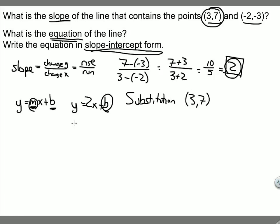So looking at this equation, 7, there's my y value, equals 2 times x value, which is 3, plus b. 7 equals 6 plus b. Subtract 6 from both sides, and I see that 1 equals b, so b equals 1.